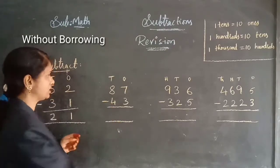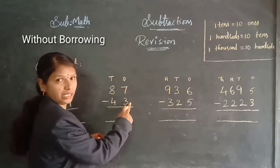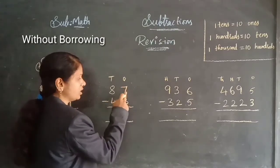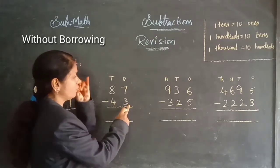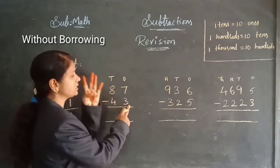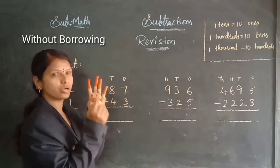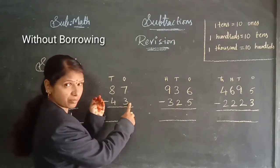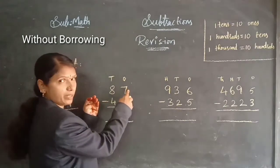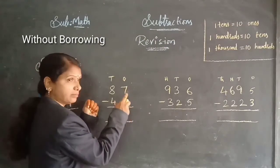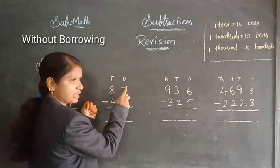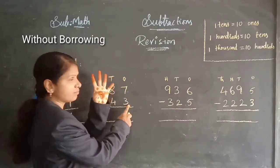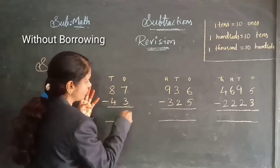Now let's do this problem. Ones column — I am starting from three, I have to reach seven. From three: four, five, six, seven. To reach seven, I require four numbers. So, four I am writing here. Now here also — I am starting from four, I have to reach eight. Four after: five, six, seven, eight. Four numbers I require to reach eight from four. If I subtract top to bottom also, we will get four only.